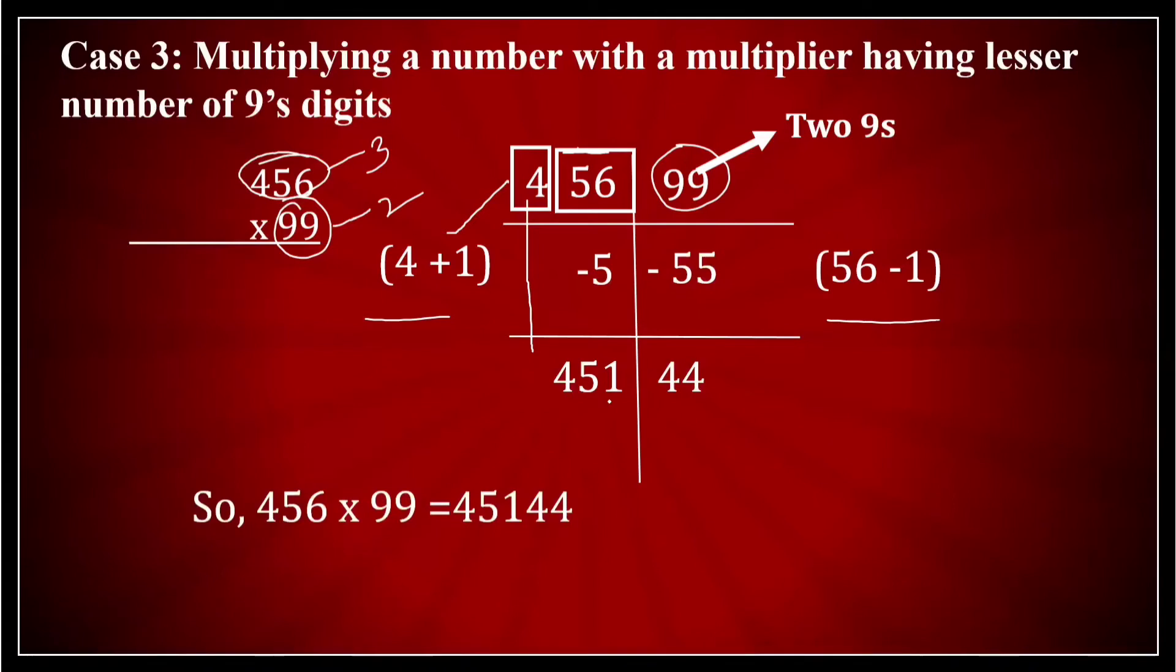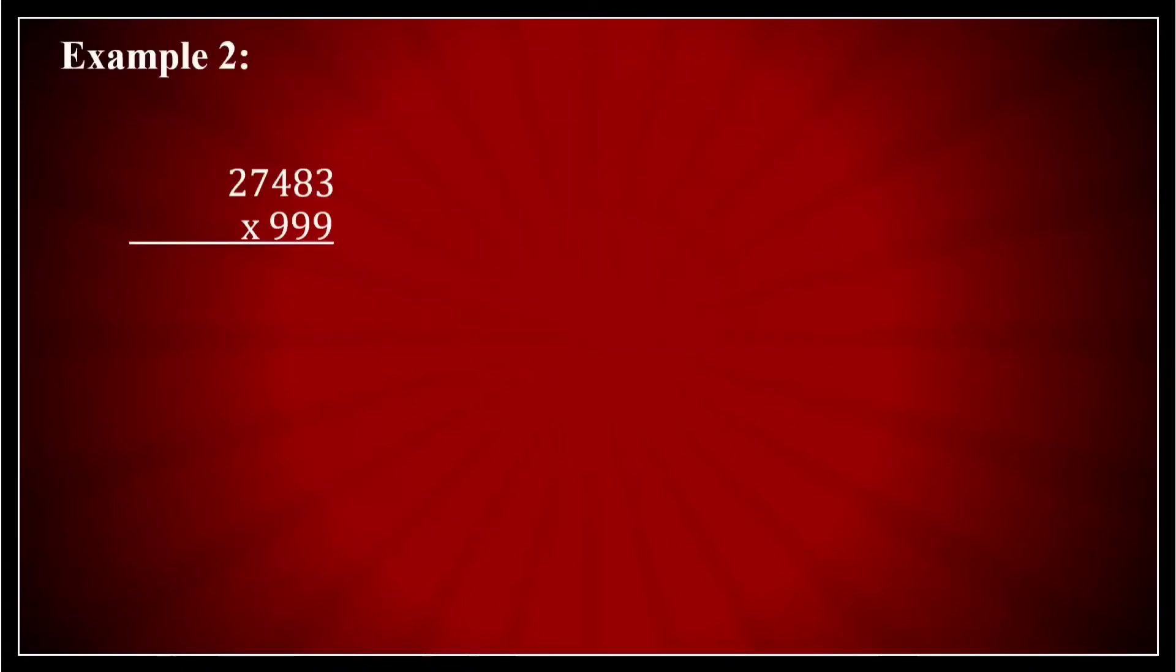Don't worry if you haven't followed. There are many more examples that we'll be taking up. Let us take one more. I've increased the number of digits. So I have or let us take one simple one before this. Supposing I had for example 245 multiplied by 99. So once again let us do it up. Let me see how fast we can do.